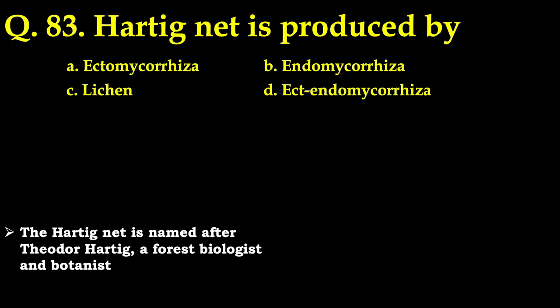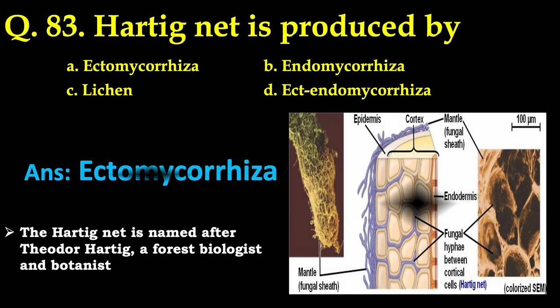The next question: Hartig net is produced by — out of Ectomycorrhizae, Endomycorrhizae, Lichen, and Ectendomycorrhizae — the correct answer is Ectomycorrhizae. The Hartig net is named after the scientist Theodore Hartig, a forest biologist and botanist. It is a network of inward-growing hyphae that extends into the root, penetrating between the epidermis and cortex of ectomycorrhizal plants. Looking at the diagram makes it clearer — the fungal hyphae between the cortical cells is known as the Hartig net, and it is generally produced by Ectomycorrhizae.